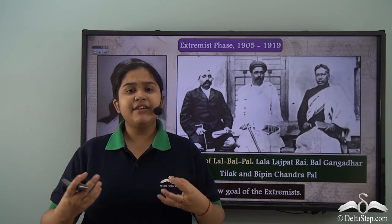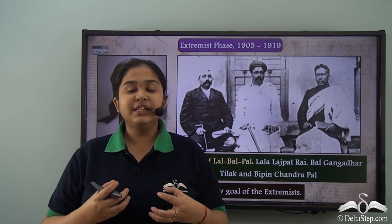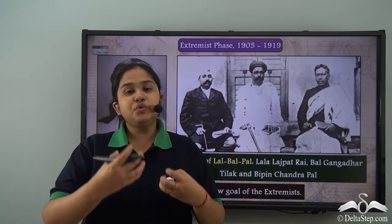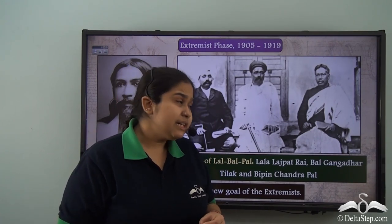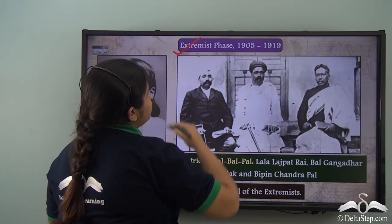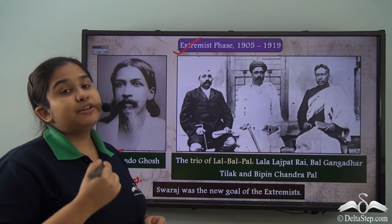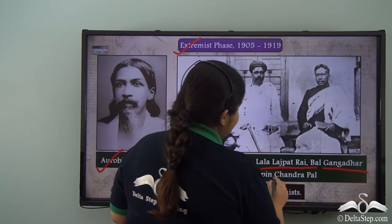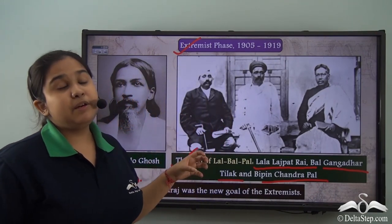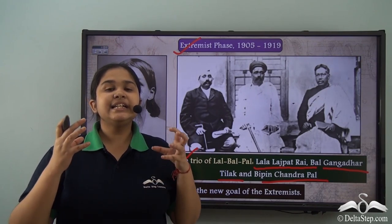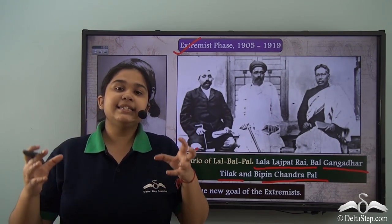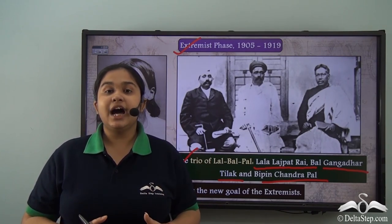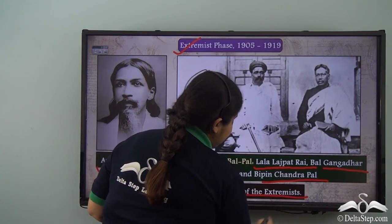There was an almost irreconcilable divide growing between the two factions, with their differences keeping on increasing as they opposed each other's beliefs. Eminent extremist leaders included Aurobindo Ghosh and the famous trio Lal-Bal-Pal — Lala Lajpat Rai, Bal Gangadhar Tilak, and Bipin Chandra Pal. The extremists were not only radical in methodology but were also the first to state the goal of Swaraj, which became the new goal of the extremists.